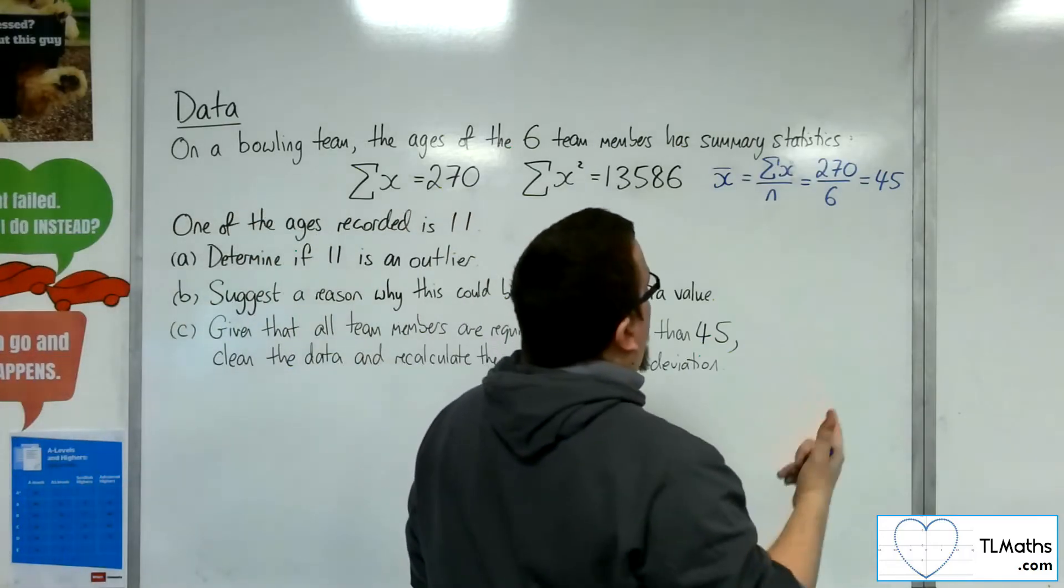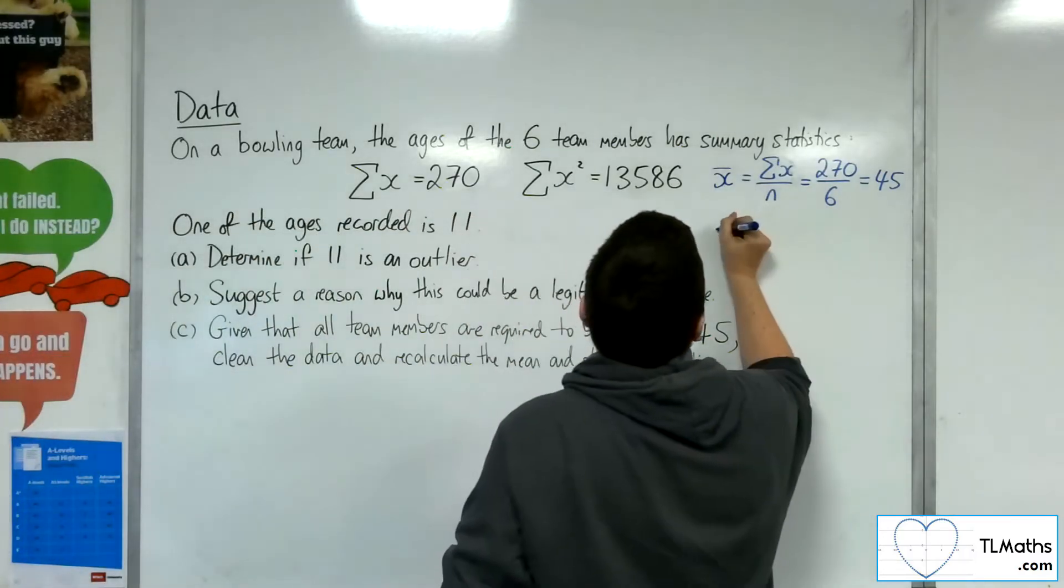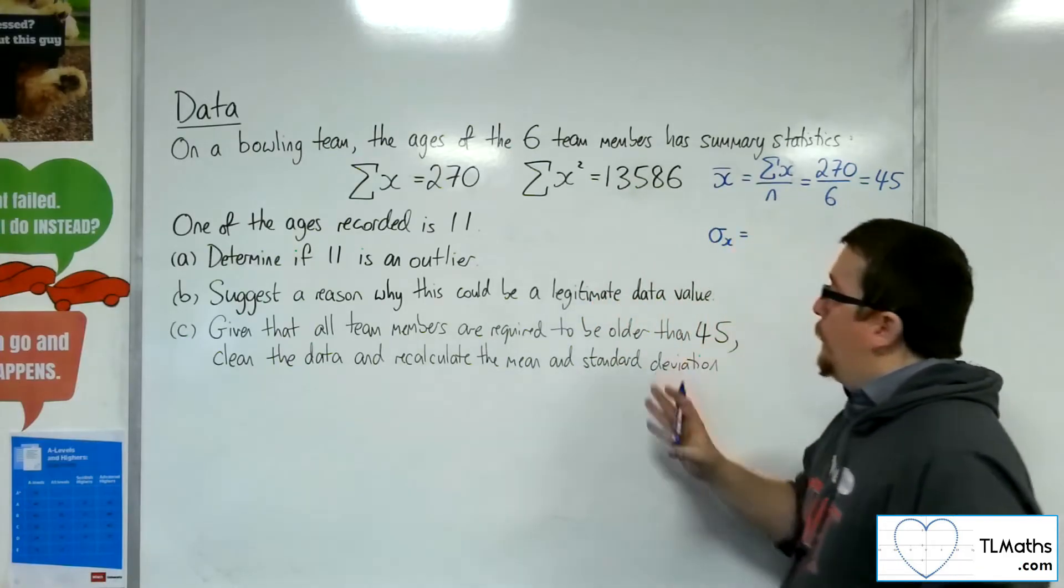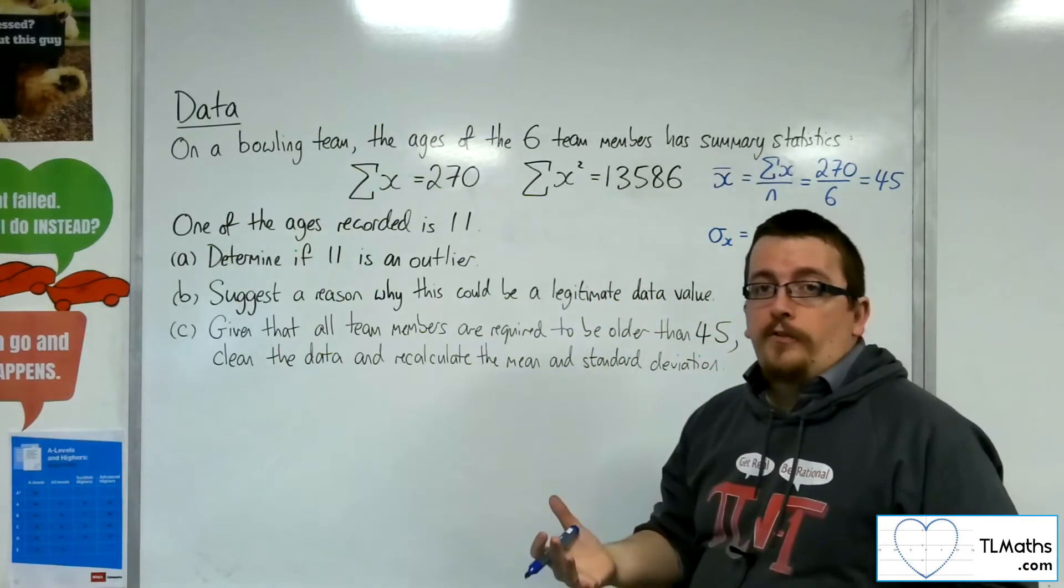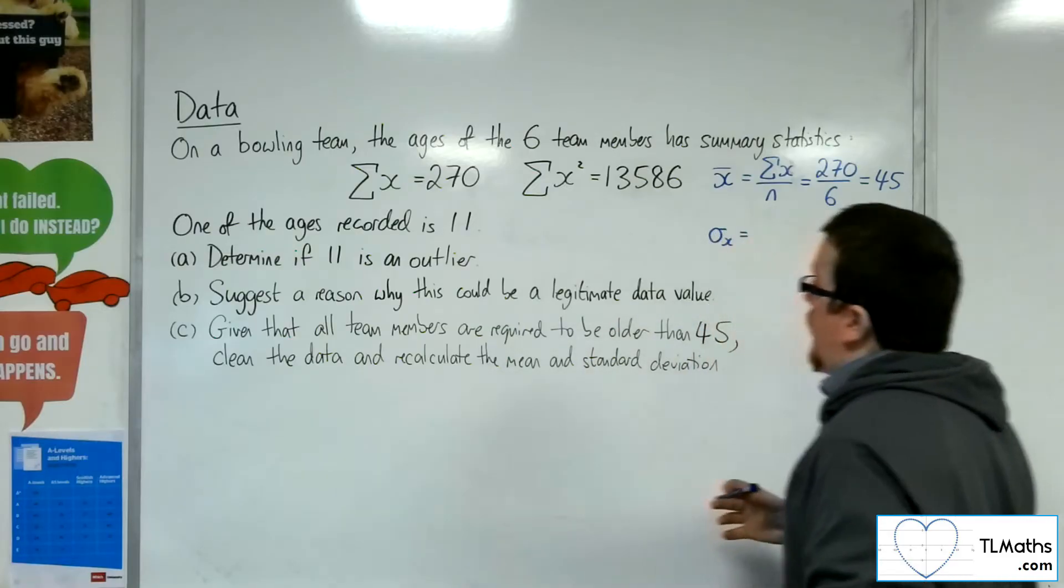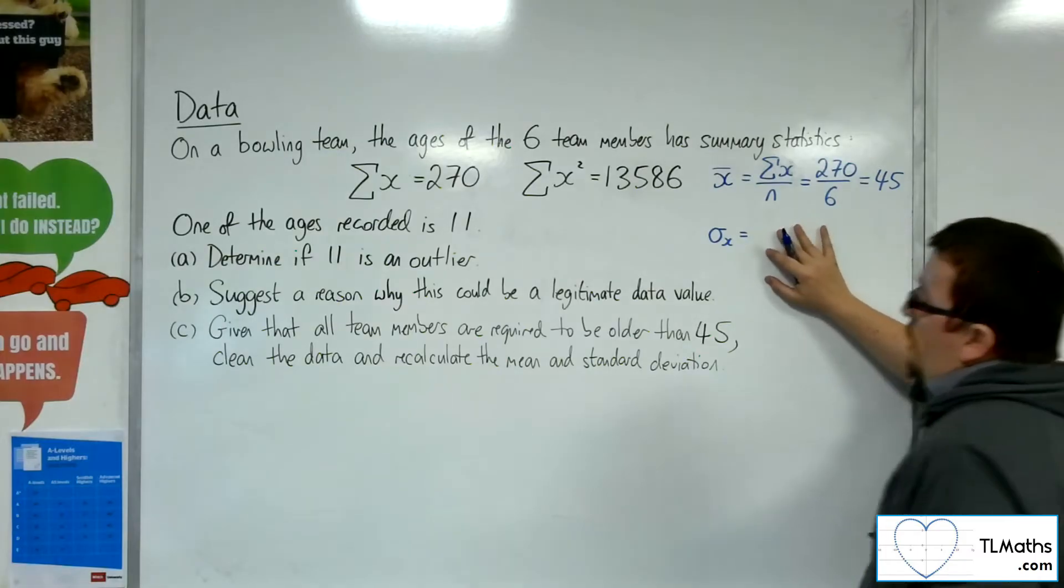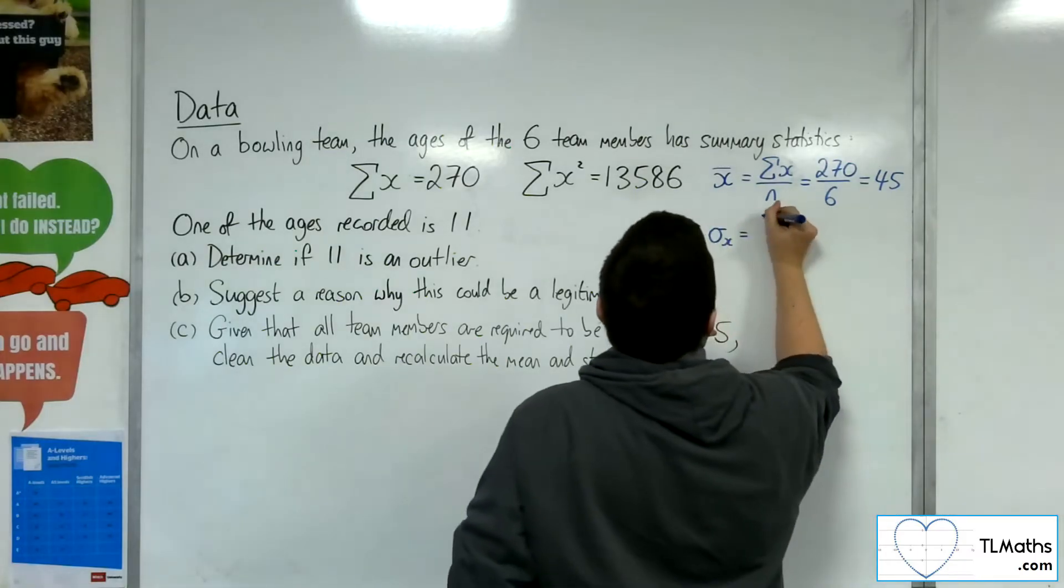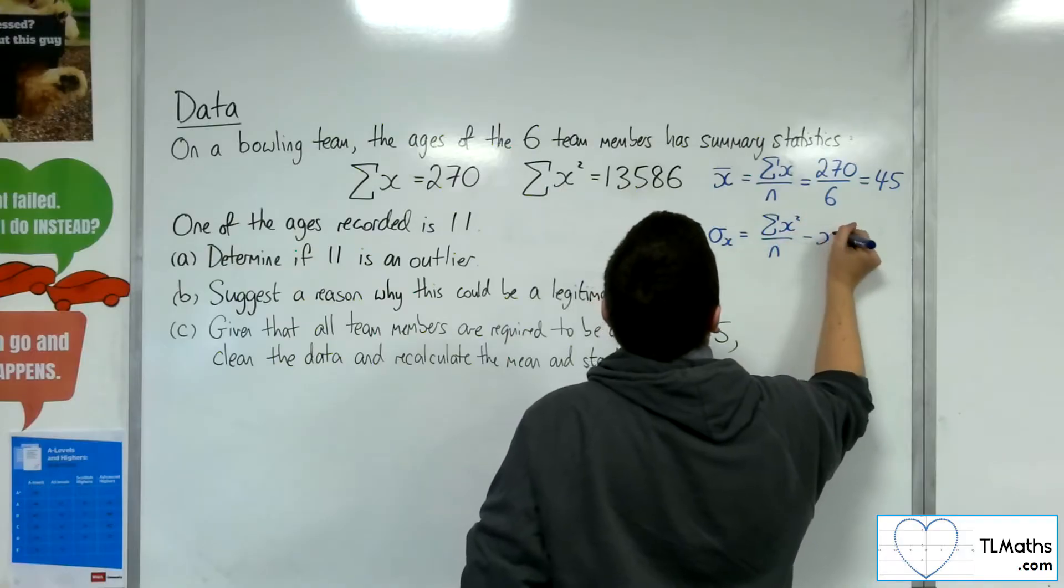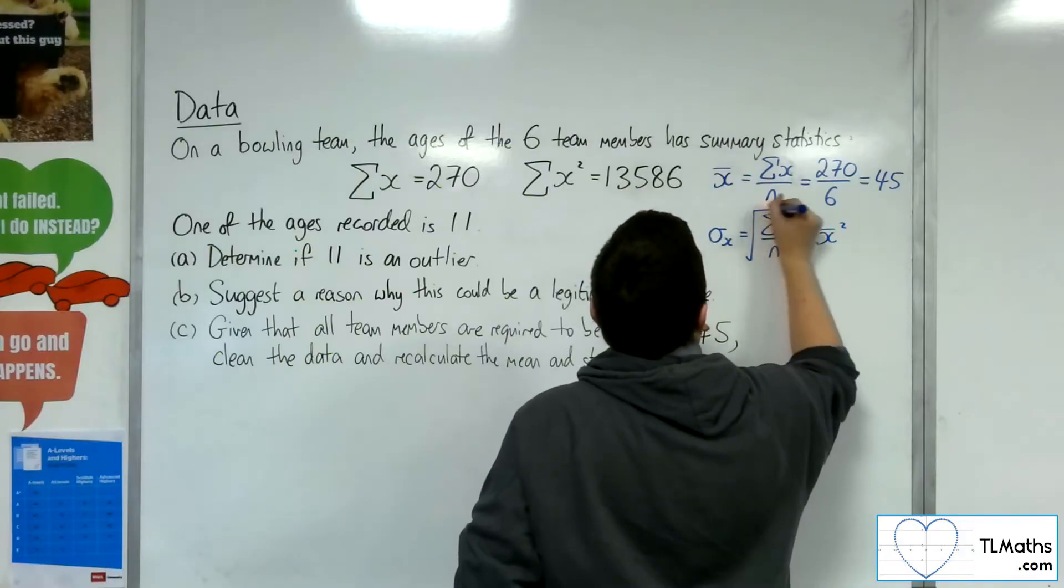Now as for the standard deviation, σx. So if you're doing OCR MEI, you're going to have to use the formula for Sxx, divide by n minus 1, then square root. For everyone else, we've got the sum of x squared divided by n, take away the mean squared, square root.